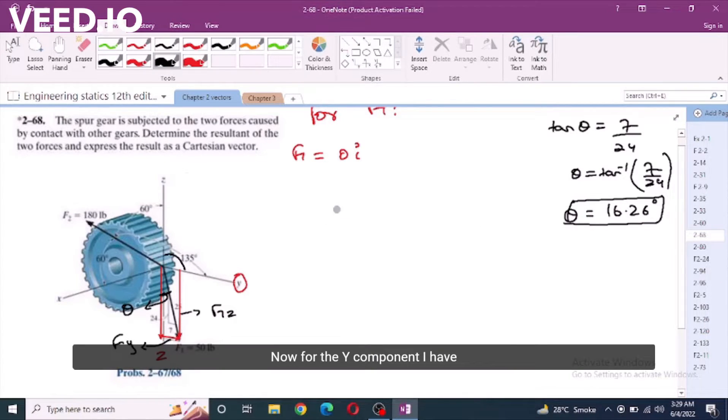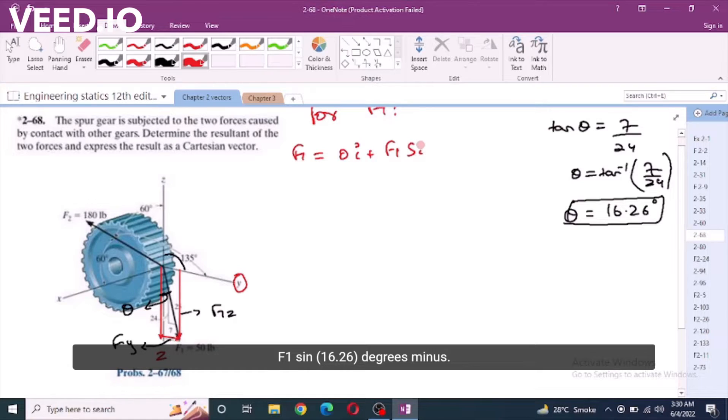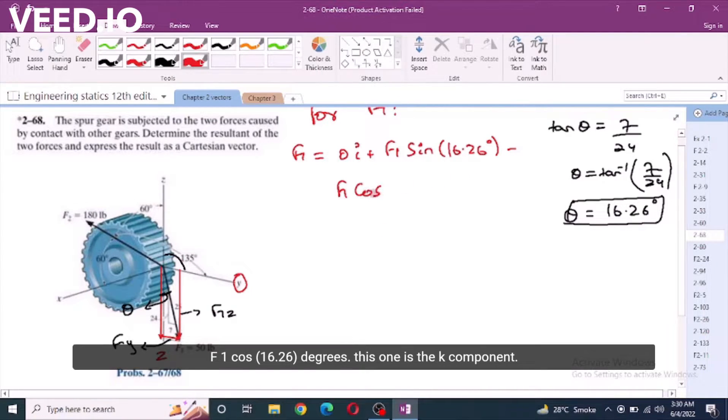Now, for the y component, I have f1 sin 16.26 degrees minus, because f1z is directed into the negative z direction, f1 cos 16.26 degrees. So, this one is k component, this is j component. F1 can be written as 0i plus, now f1 is given which is 50 lbs.